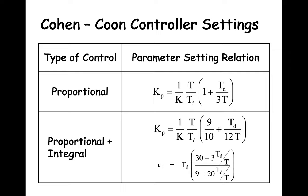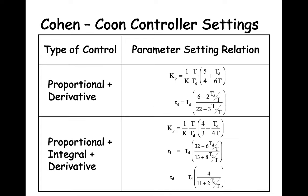This slide shows the equations to use to calculate Kp if using proportional control only, and equations to calculate Kp and tau i if using PI control. The equations are also in the course packet. This slide shows the equations to use to calculate Kp and tau d if using PD control, and the equations for calculating Kp, tau i, and tau d if using PID control.